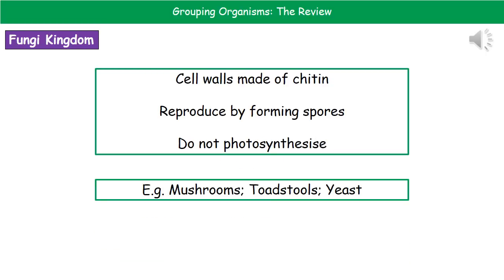The third kingdom is the fungi kingdom. Their features include cell walls made of chitin, reproduction by forming spores, and they do not photosynthesize. Three examples are mushrooms, toadstools, and yeast.